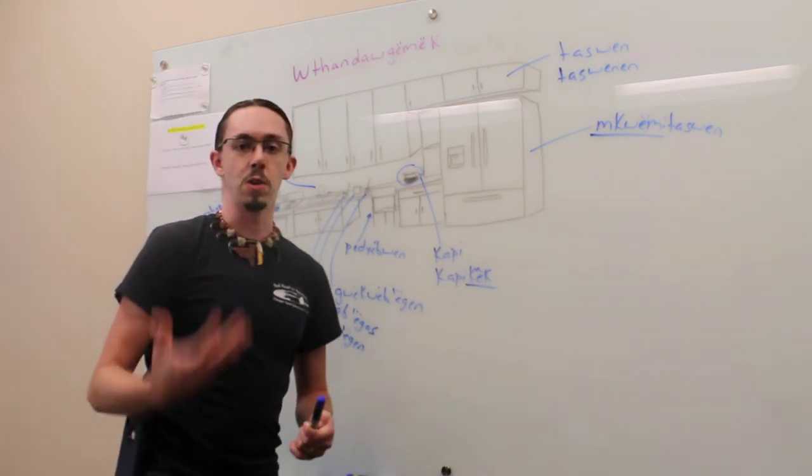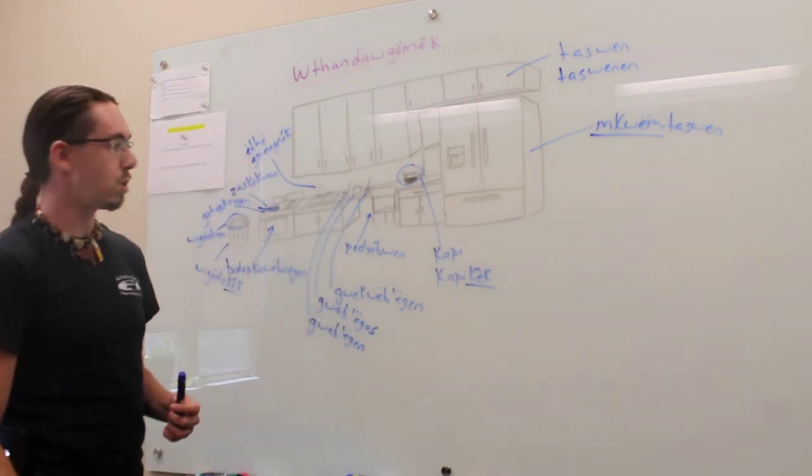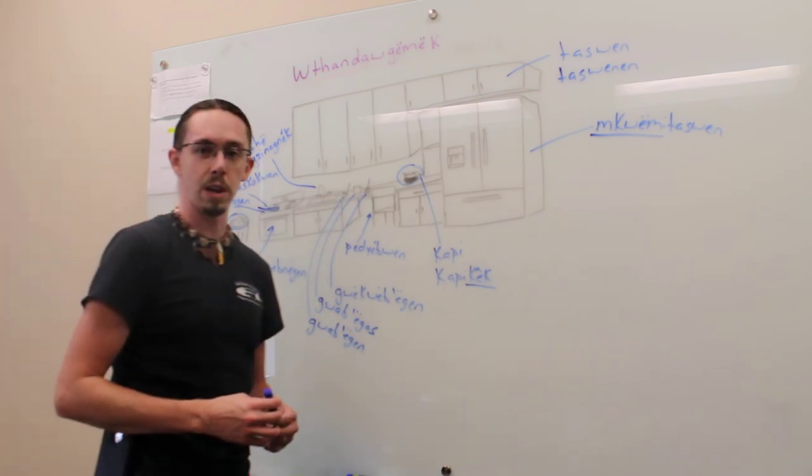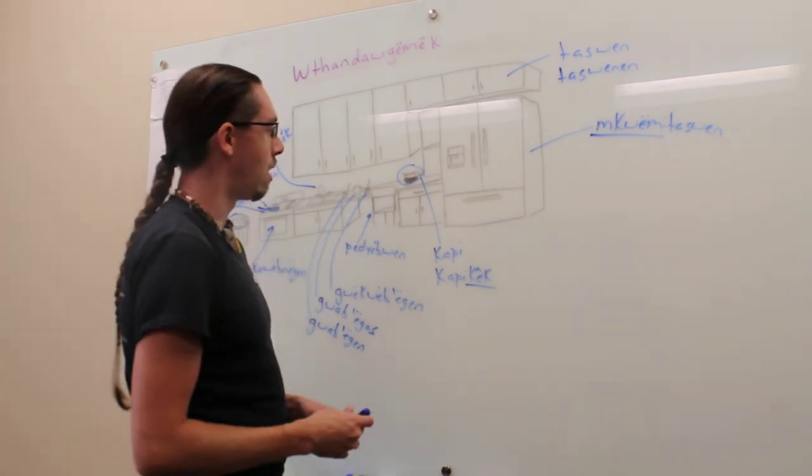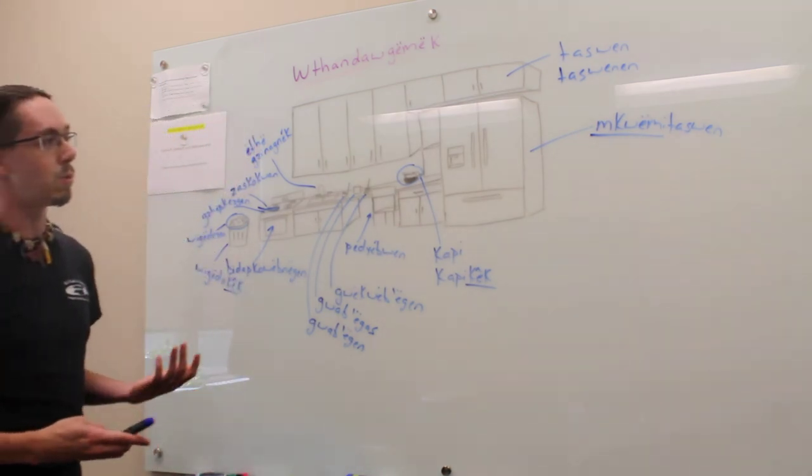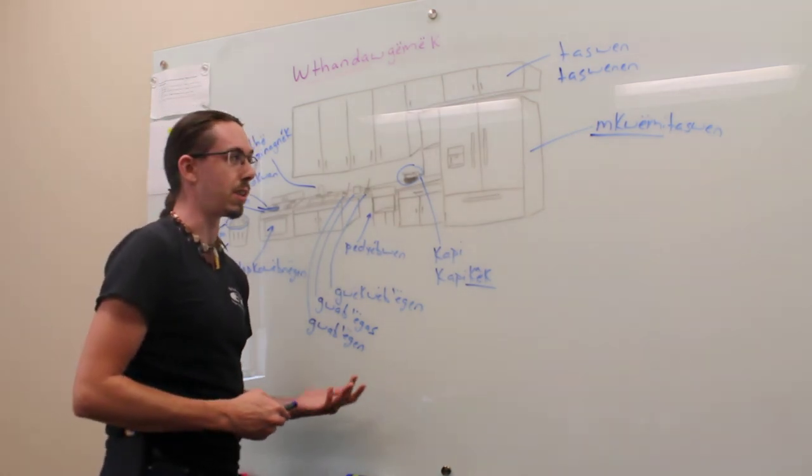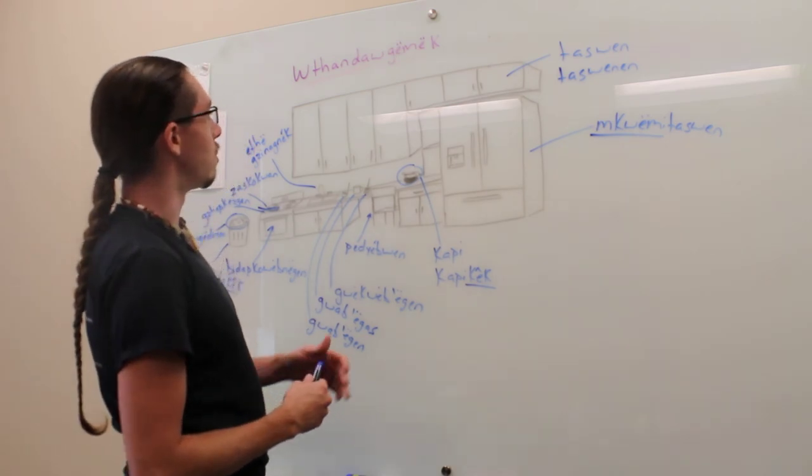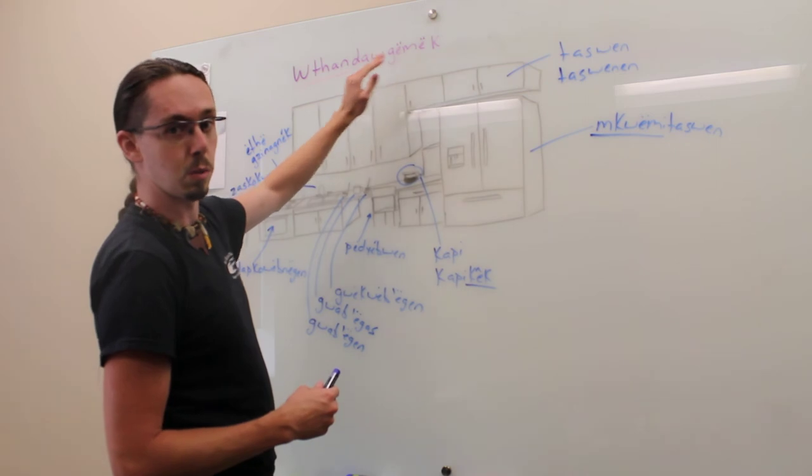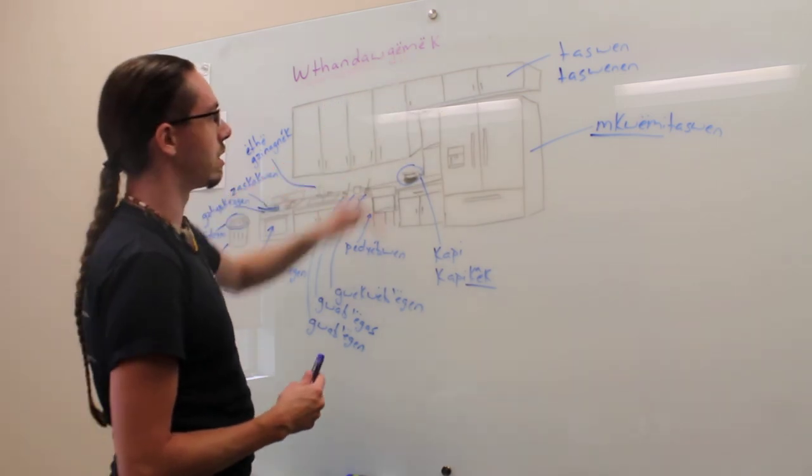So these are things that you can label in your house and start to use. I know a lot of people are quarantined at home. There's not a whole lot you can do to get out and about because of the situation right now. So something you can do is practice at home. Practice language at home. So we got Wigodoyen cook. This is the kitchen.